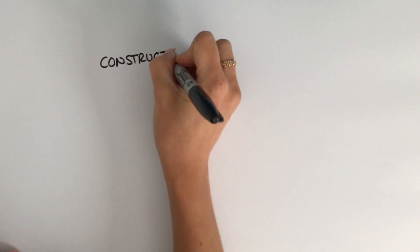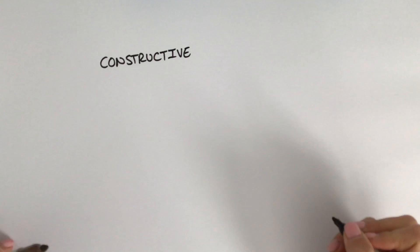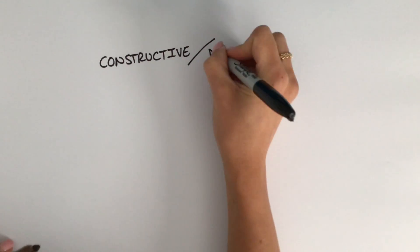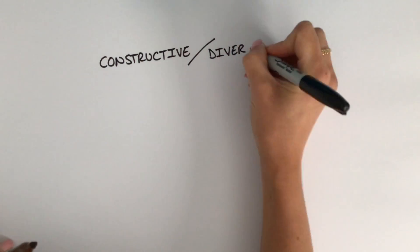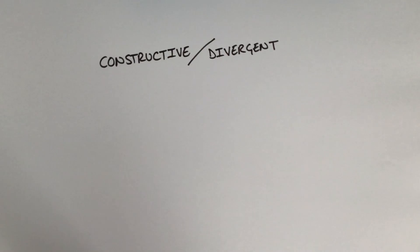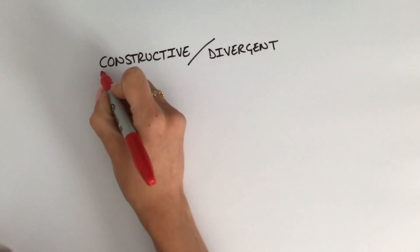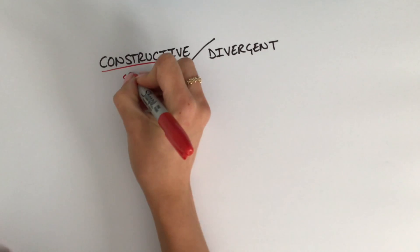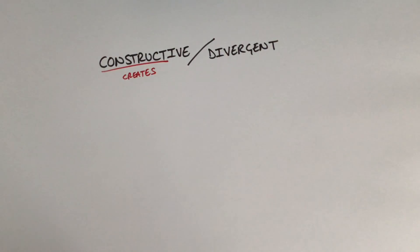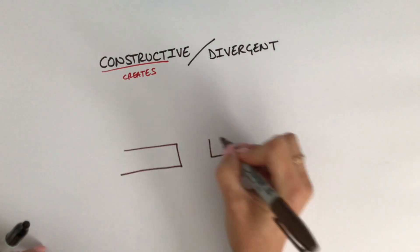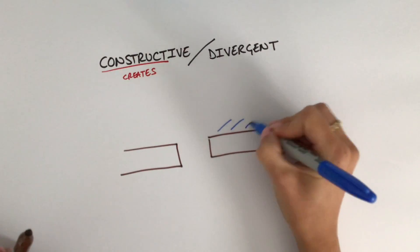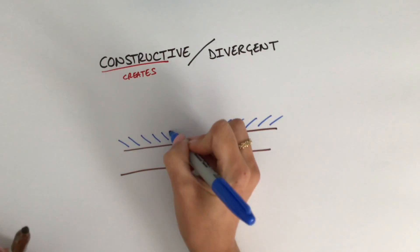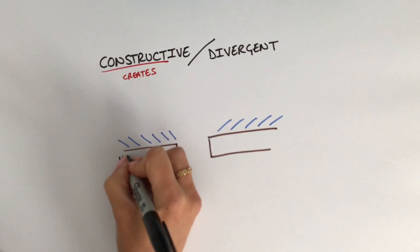Our second plate boundary is known as a constructive plate boundary for those studying Key Stage 3 and Key Stage 4 GCSE geography, but for those studying A-level geography you might be more accustomed to the phrase 'divergent.' If we break down the word 'construct,' we're thinking about creating something — so something is being created at this particular plate boundary. I'm going to give you the example of two tectonic plates that are both oceanic plates.